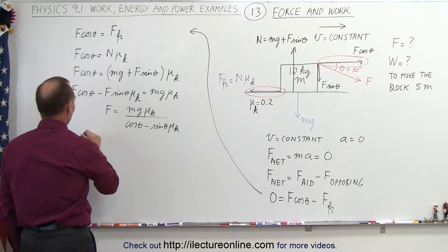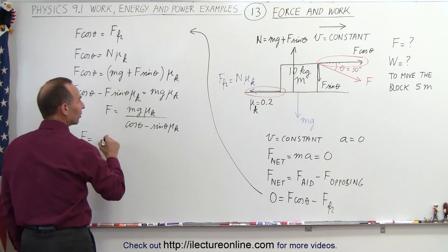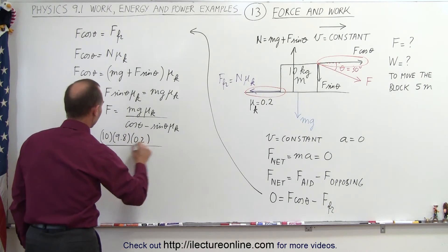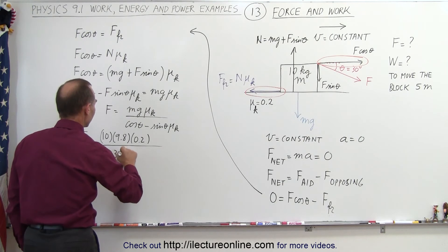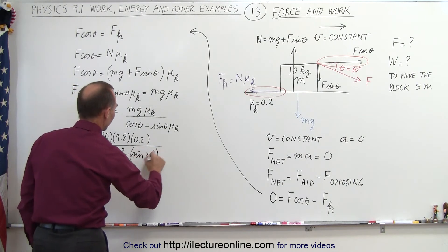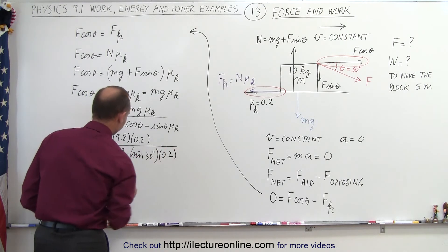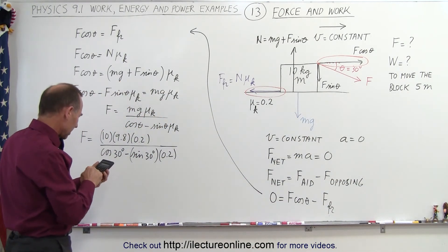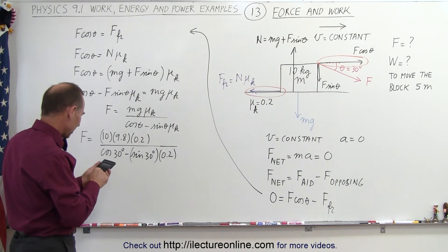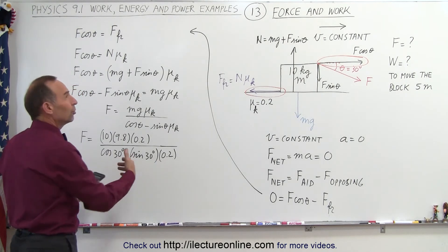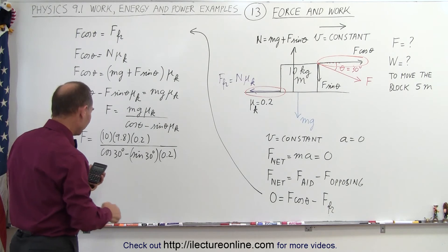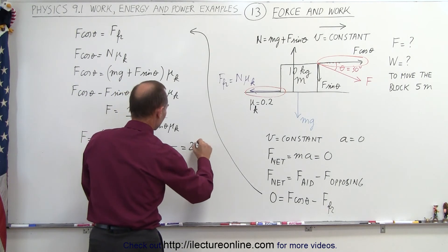Plugging in all the numbers, the force required to pull the block at constant speed equals mass times g times mu sub k divided by cosine of 30 degrees minus sine of 30 degrees times 0.2. Computing: 98 times 0.2 divided by (cosine 30 minus 0.5 times 0.2), which gives a force equal to 25.6 newtons.